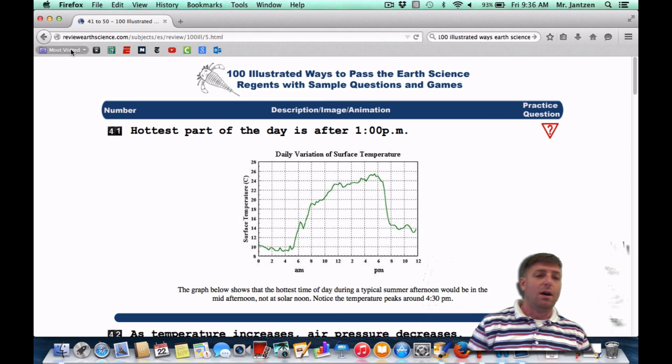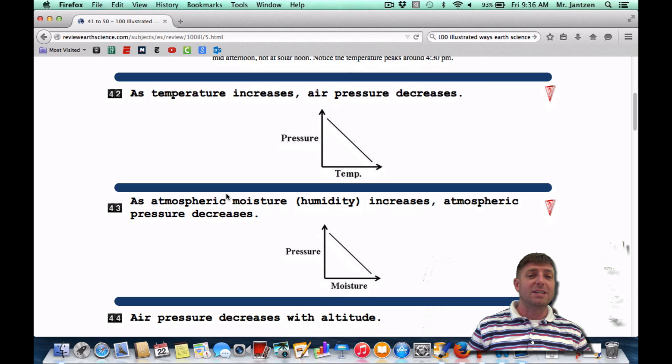Number 42. As temperature increases, the air pressure decreases. So as it gets hotter, that means the molecules spread out more. And if the molecules spread out more, then you're not going to have as much pressure because the molecules aren't as confined. So as the temperature goes up, your pressure actually is going to drop. Looking at this graph, as temperature increases, your pressure is going to decrease. So we call that an indirect relationship.